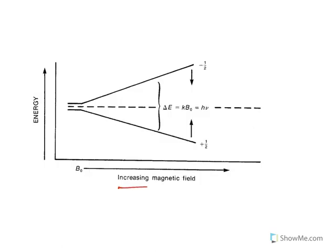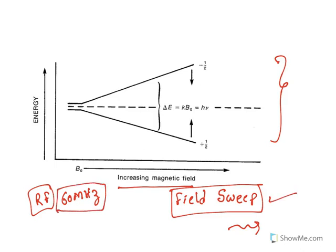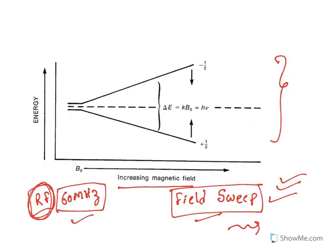Increasing the magnetic field increases the energy difference between orientations. In practice, the common method is called field sweep: the radio frequency is kept constant at, say, 60 MHz, and the applied field is varied. Whenever the frequency match occurs, absorption is detected — this is field sweep. Alternatively, if the field is kept constant and frequency is changed, it is called frequency sweep, but field sweep is most commonly used.